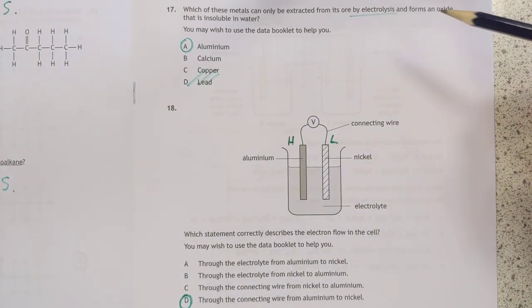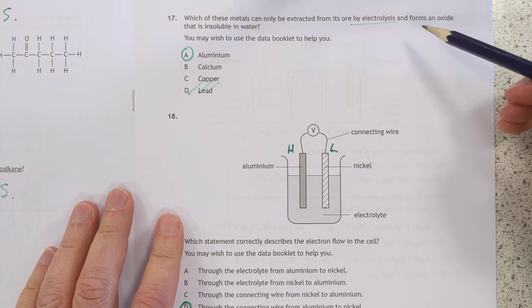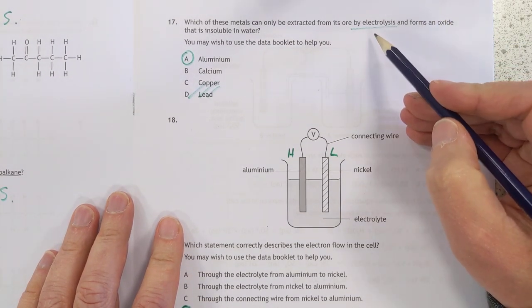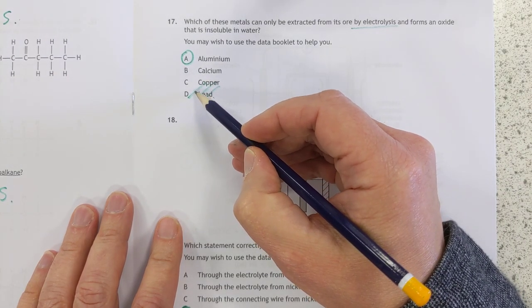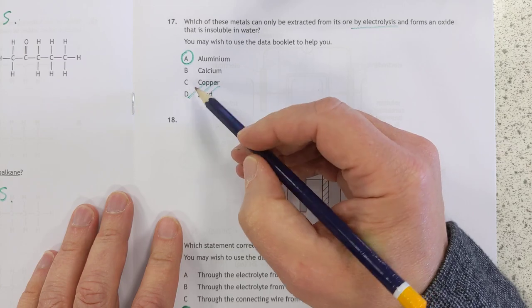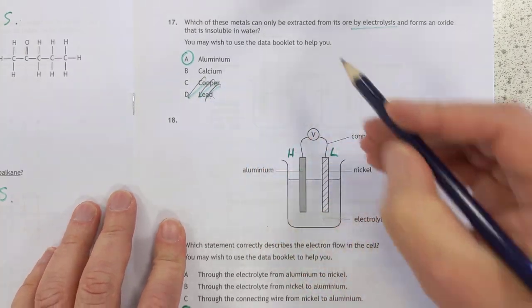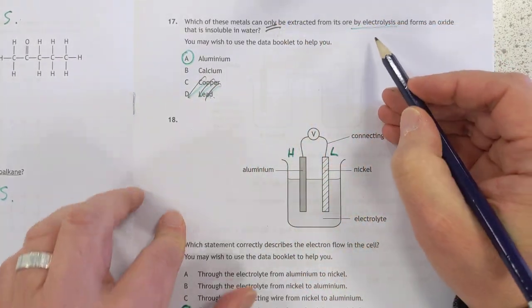Number 17. Which of these metals can be extracted by electrolysis, and forms an oxide that's insoluble in water? Well, copper and lead can be extracted by reaction with carbon. So they are thrown out. It says only be extracted by electrolysis.